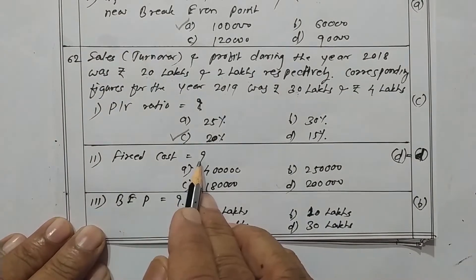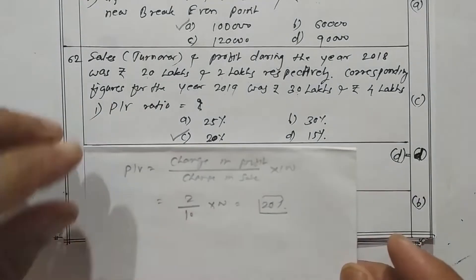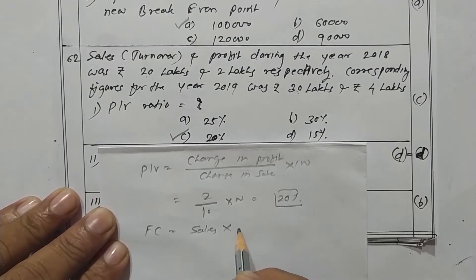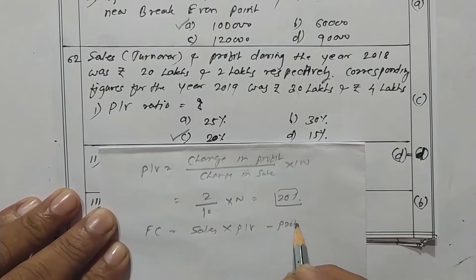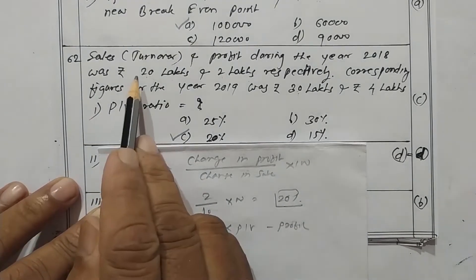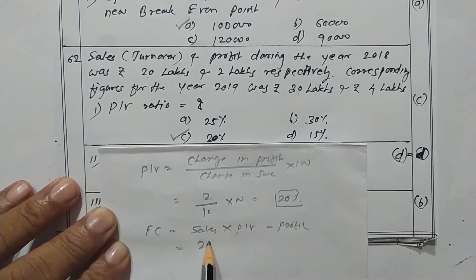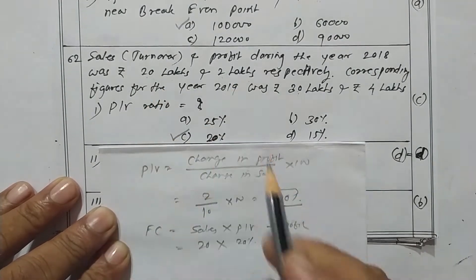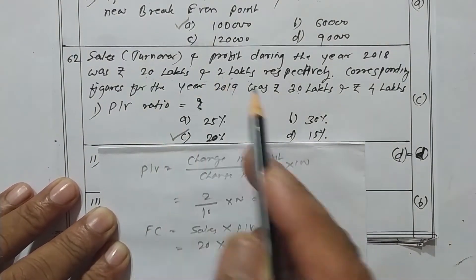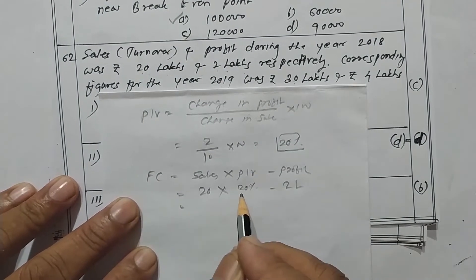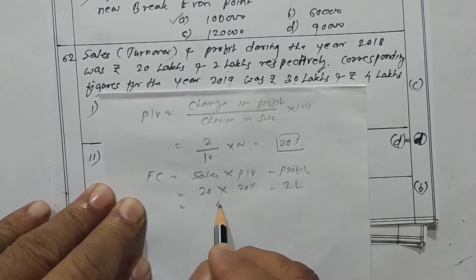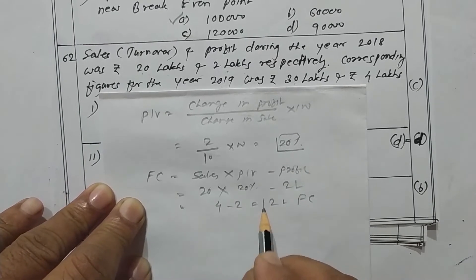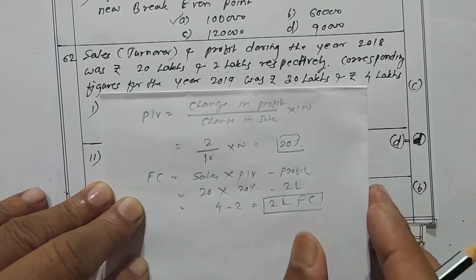Now fixed cost. The formula for fixed cost is sales into PV ratio minus profit. Sales is rupees 20 lakhs, PV ratio is 20 percent, and profit is rupees 2 lakhs. So 20 lakhs into 20 percent is 4 lakhs, minus 2 lakhs gives 2 lakhs as the fixed cost.